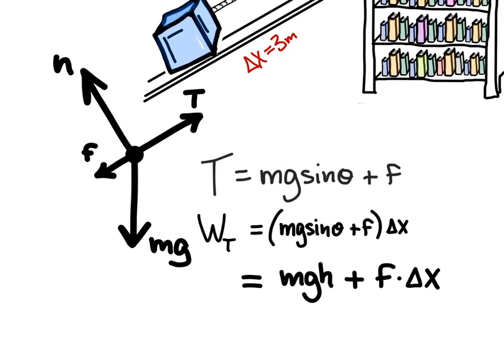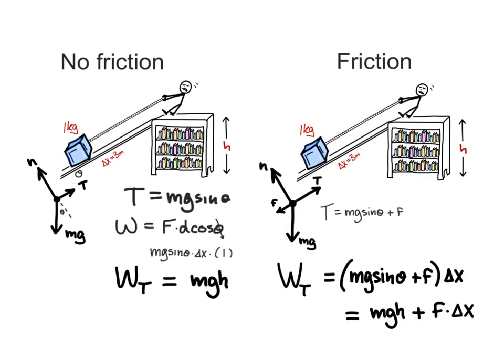And it makes a lot of sense that it would be the magnitude of gravitational potential energy plus the magnitude of work done against friction. And as a result, the only difference between our two terms of work done by tension is that additional work done against friction.